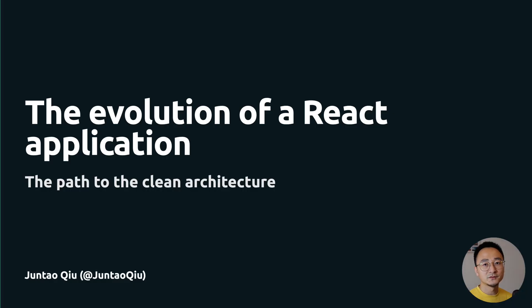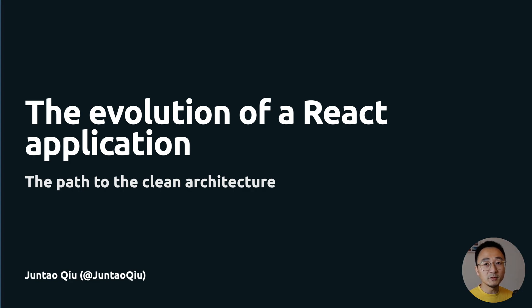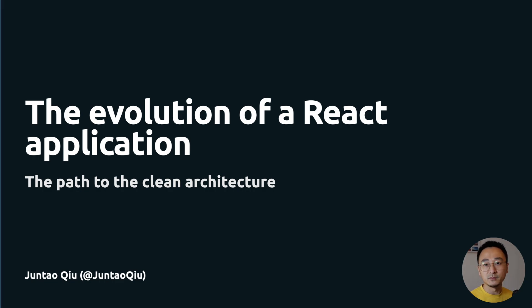I will introduce five different architecture styles, each building on top of the previous one. You don't have to choose the final fifth one, but you do need to think about it and assess your current application structure. Maybe you find you're struggling to add new features, or fixing bugs is time-consuming and it's very difficult to find the root cause of a defect. In that case, you will need to assess your current structure and determine if any reshaping is required.